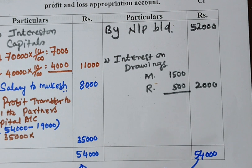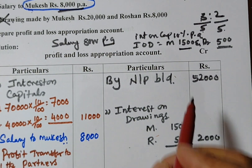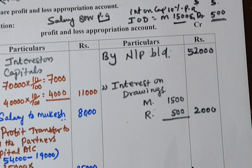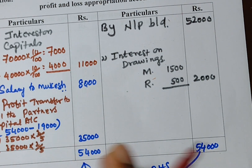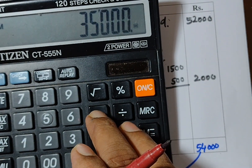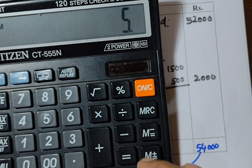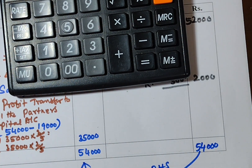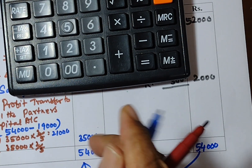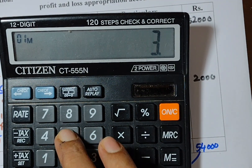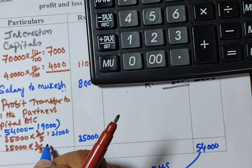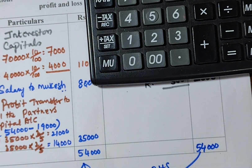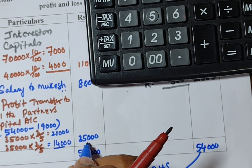The profit of rupees 35,000 is distributed among Mukesh and Roshan in the ratio of 3:2. Mukesh's share: 35,000 × 3/5 = rupees 21,000. Roshan's share: 35,000 × 2/5 = rupees 14,000. Verification: 21,000 plus 14,000 equals 35,000.